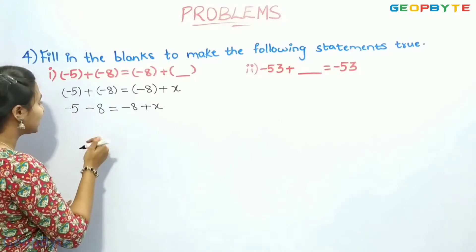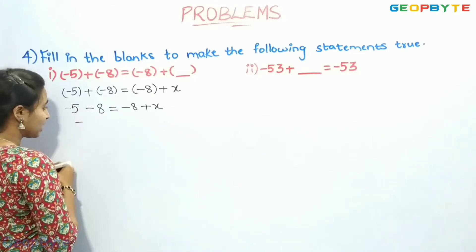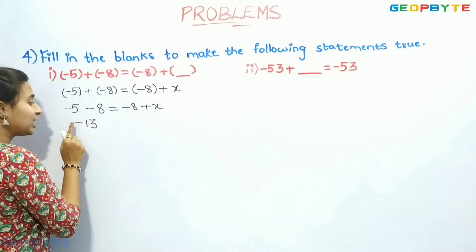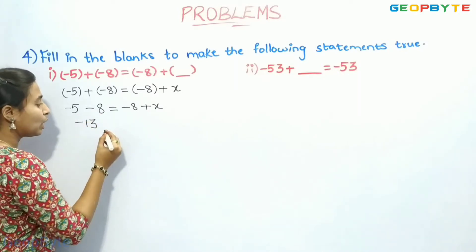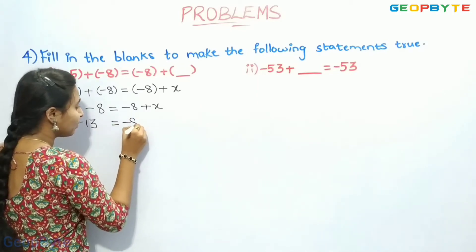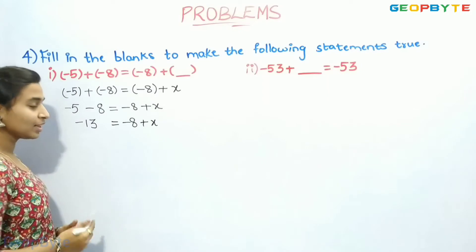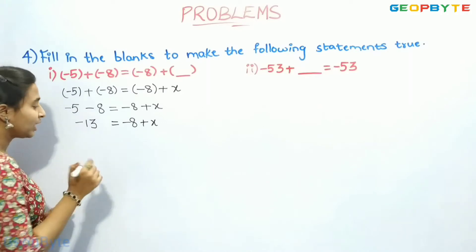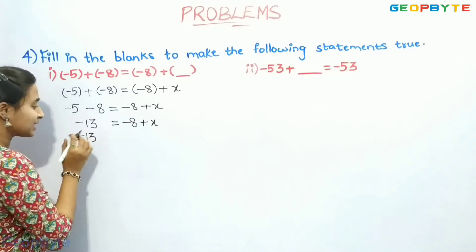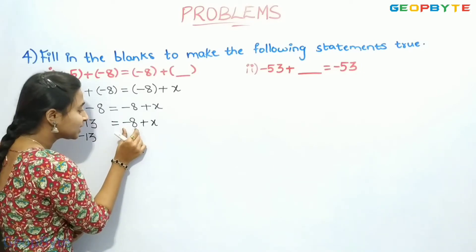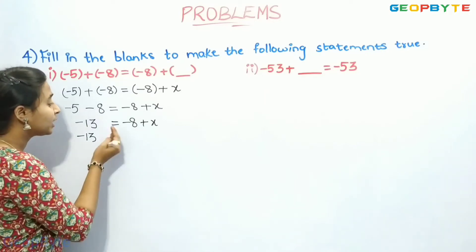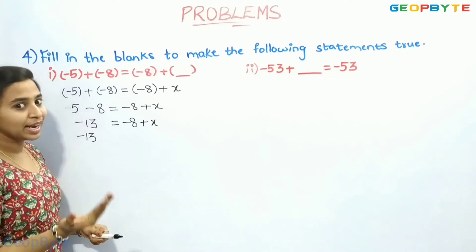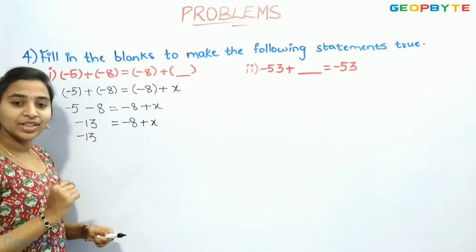5 plus 8 is 13. We should keep the minus sign and write 13. Since we have two minus signs, the sign remains minus and the numbers will be added. So the left-hand side gives minus 13. On the right-hand side, we have minus 8 plus x. Now, we will take this minus 8 to the left-hand side. Let us write minus 13 as it is.